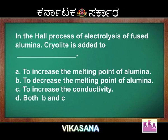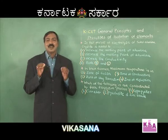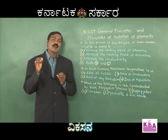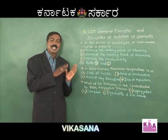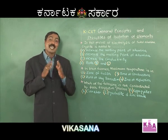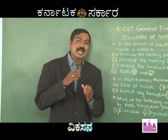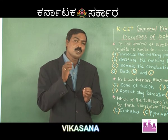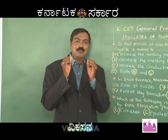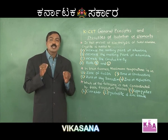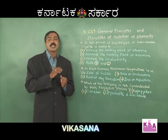In Hall's process of electrolysis of fused alumina, cryolite is added. Cryolite is Na3AlF6, and it is also an ore of aluminium. In Hall's process of extraction of aluminium from alumina, cryolite is fused with calcium fluoride. The role of cryolite is that it lowers the melting temperature of alumina.